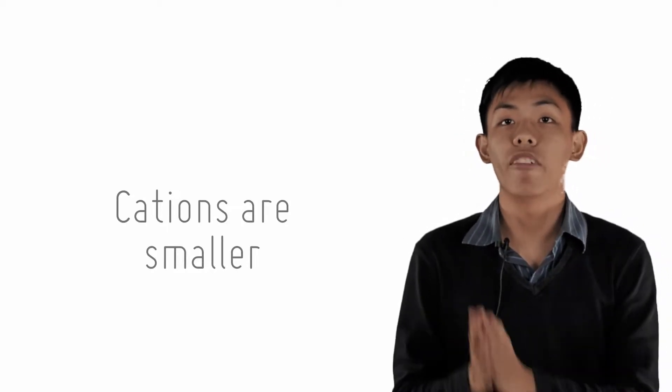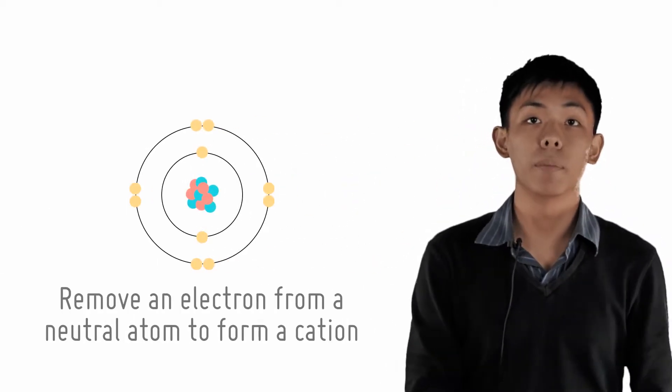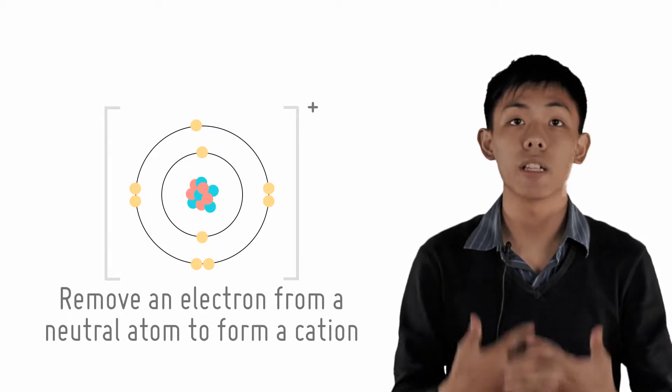A cation is one where we remove an electron from a neutral atom. That is, a cation is a positive ion.